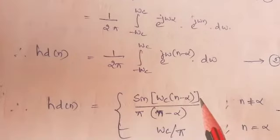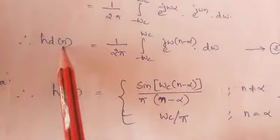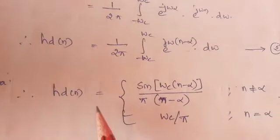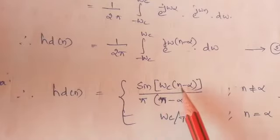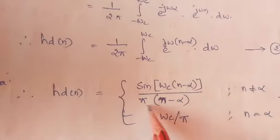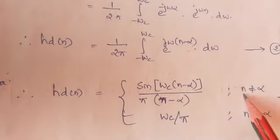Next, after simplifying, we have to express the final term in this format: hd(n) equal to sine of ωc times (n minus α) divided by π times (n minus α), where n is not equal to α.